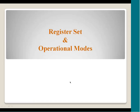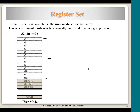Now let us go into the register set and different operational modes of the processor. These are the registers a user would normally use — they are all 32-bit wide registers called R0 to R15. Three of these registers shown in shadow are for special purposes. CPSR is the current processor status register, which holds conditional flags and information about internal operations.